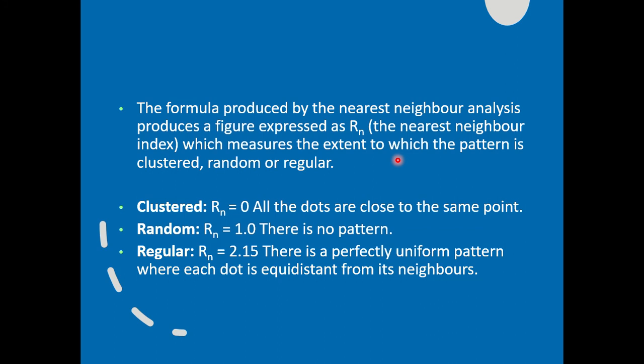And the closer towards 2.15 the score is, then we know that the settlements, or whatever it is we're measuring, are perfectly regular and equidistant. Clearly, again, it's very unlikely you're going to get a score of 2.15, because what would you be measuring on a map that is perfectly uniform in its pattern, with each point being equidistant from its neighbour, equal distance from its neighbour. It's unlikely you're going to get a 1.0 perfectly as well, because it's likely that there are some factors that are causing settlements to form little groups or little clusters. But a perfect 0 is also highly unlikely, because the settlements are not all likely to be completely clustered around the same point.